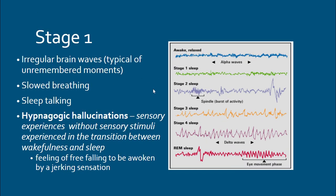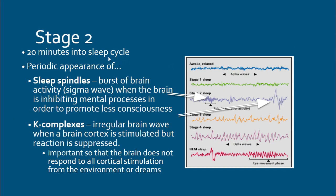Stage one is close to alpha waves — breathing starts to slow as you prepare for sleep. It lasts about 15 to 20 minutes. An interesting phenomenon in stage one is hypnagogic hallucinations — that feeling of falling right before you fall asleep. You're pseudo-dreaming, you think you're falling, and you suddenly jerk your hands up trying to catch yourself, but you're still in bed. This is a hypnagogic hallucination happening in stage one.